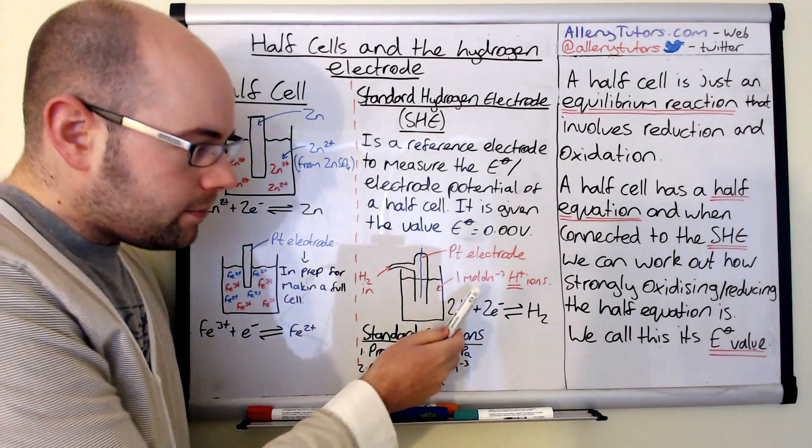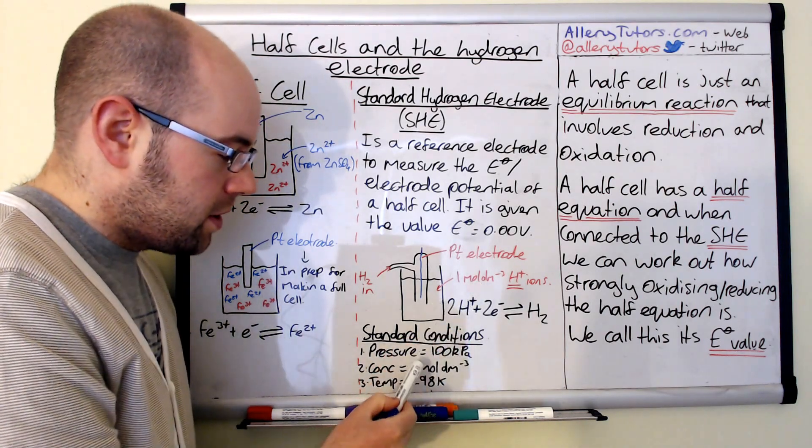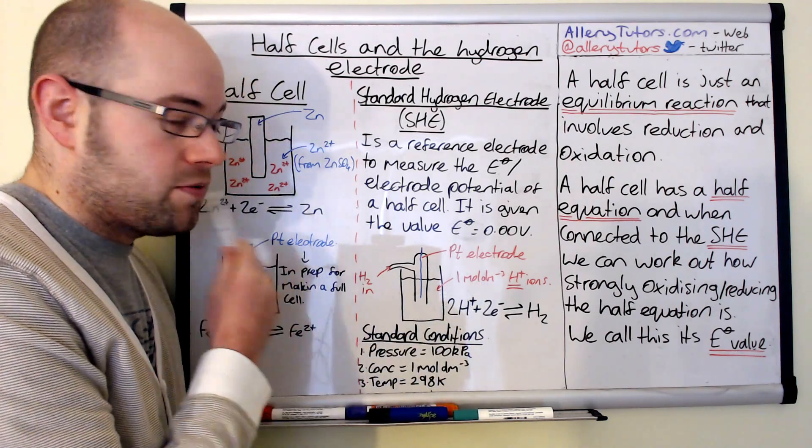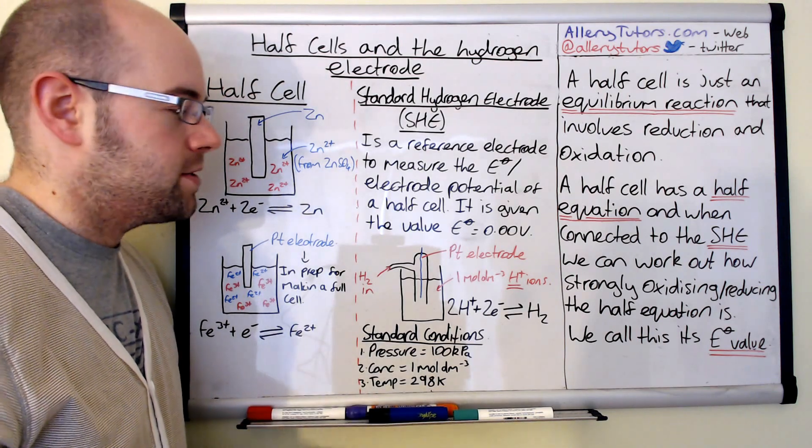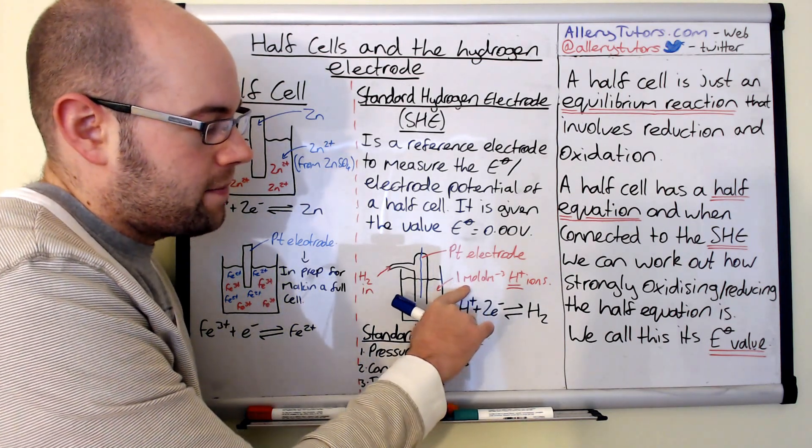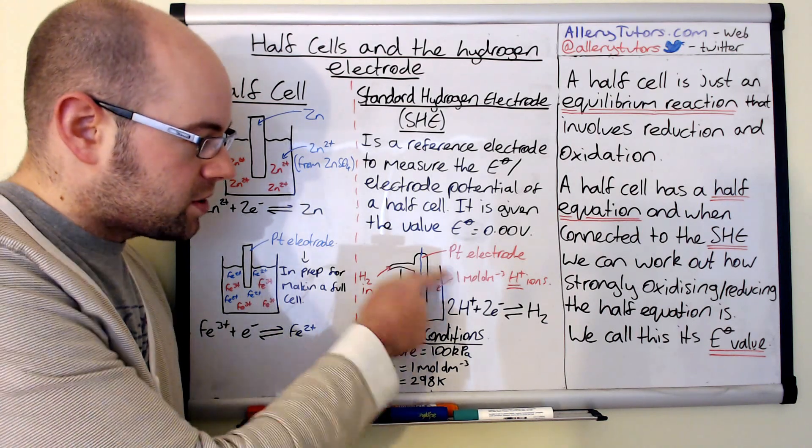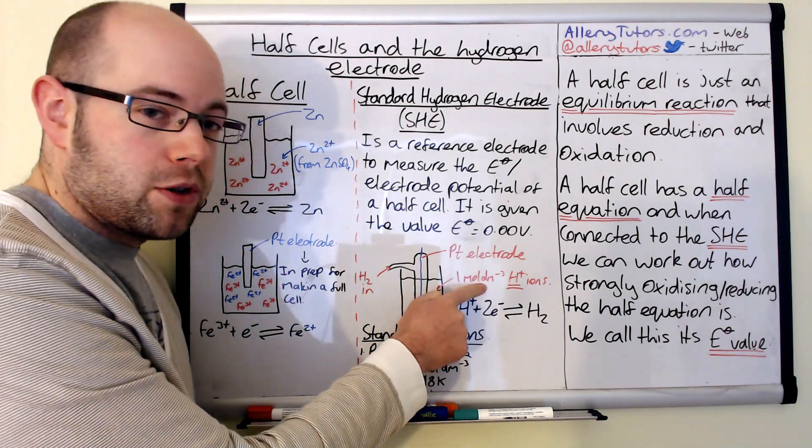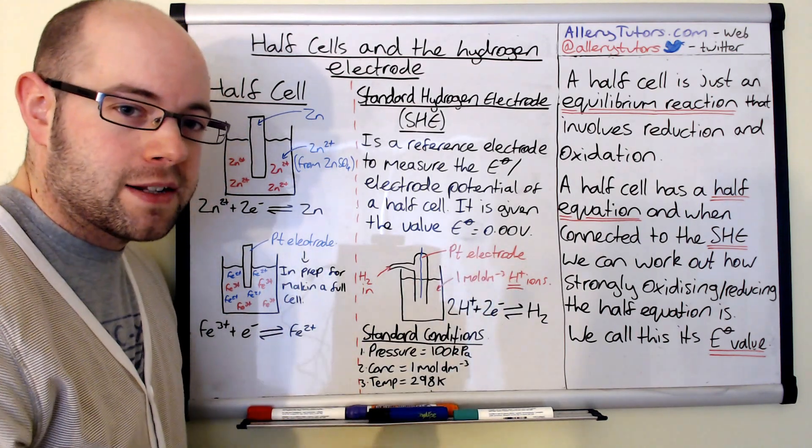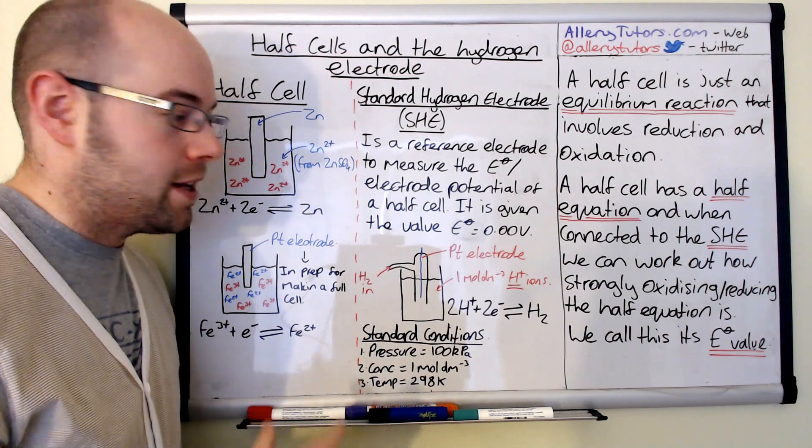Now, just one final thing. We did say that one of the standard conditions for these reactions when we're measuring E⁰ values is to have the concentrations of one mole per dm cubed. You've got to be careful, because with the standard hydrogen electrode, it's one moles per dm cubed of H+ ions.